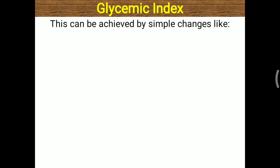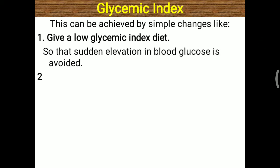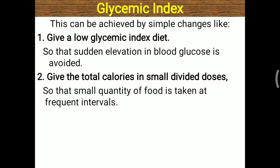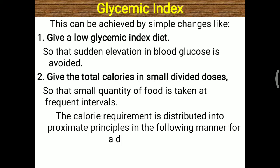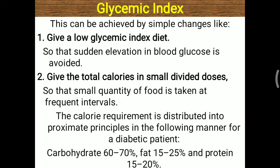This can be achieved by simple changes: give a low glycemic index diet so sudden elevation of blood glucose is avoided. Give total calories in small divided doses — instead of taking diet only 3 times, a diabetic person can take diet 6 times. The calorie requirement is distributed among macronutrients as follows: carbohydrates with low glycemic index should be 60 to 70%, fat 15 to 25%, and protein 15 to 20% — a mild variation from the normal 60/20/20 ratio.